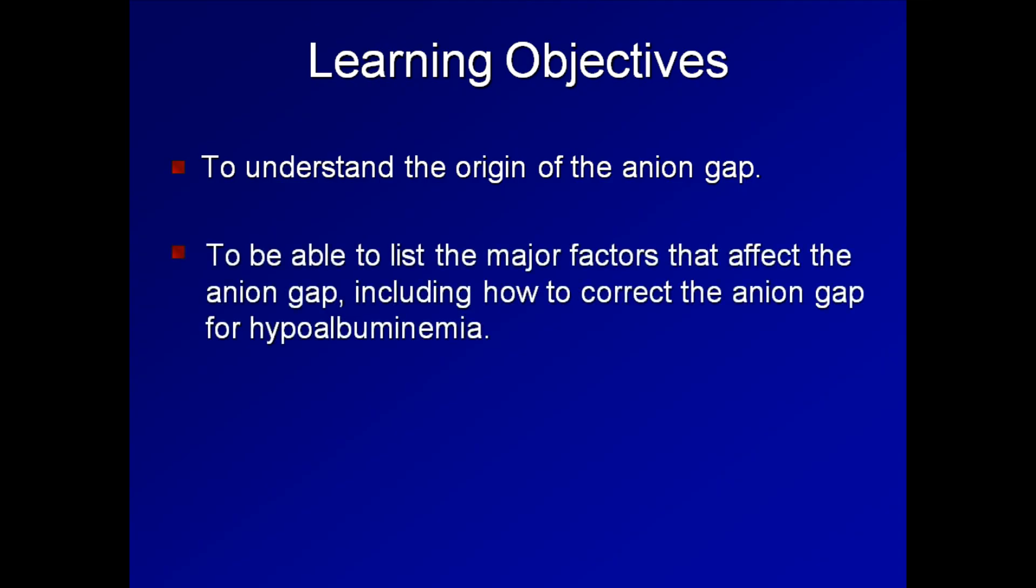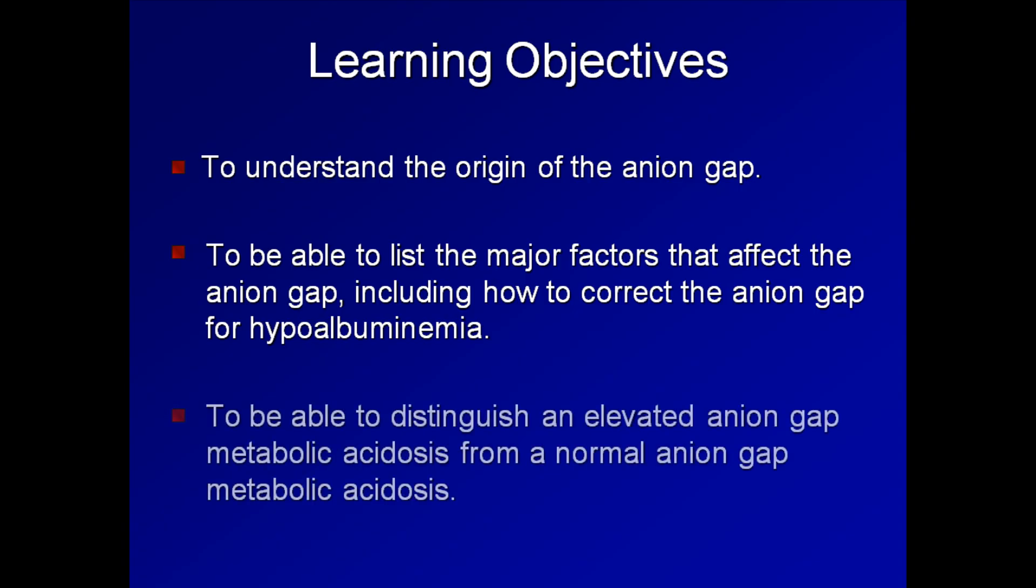The learning objectives are as follows. First, to understand the origin of the anion gap. Next, to be able to list the major factors that affect the anion gap, including how to correct the anion gap for hypoalbuminemia. Finally, to be able to distinguish an elevated anion gap metabolic acidosis from a normal anion gap metabolic acidosis.